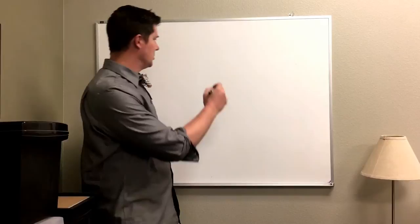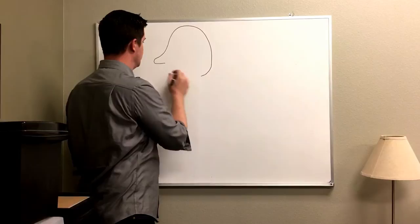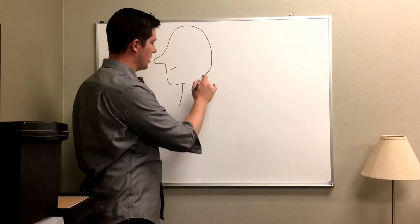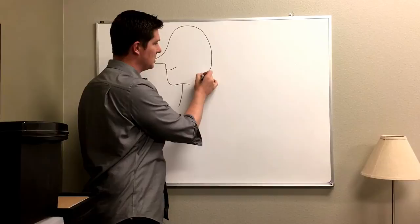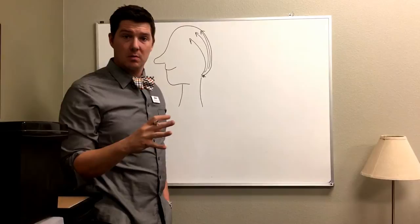The greater occipital nerve sits at the base of your head, right through here, and is responsible for sending signals all the way up to the top of the skull, which is all well and good until it gets impinged.